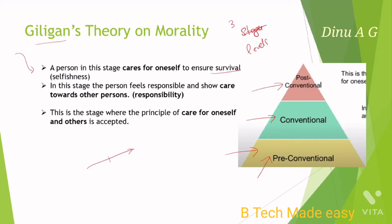At the conventional stage level, the person feels responsible and shows care towards other persons. At this conventional stage, a person feels responsible — no longer purely selfish. In the second stage, a person feels responsible and shows care towards other persons. This is the stage of responsibility.